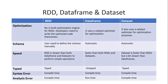Here are the main differences between RDD, DataFrame, and DataSet. In terms of optimization, RDD has no built-in optimizations — developers have to write optimization code themselves, which is a drawback. DataFrames and Datasets both have Catalyst optimizers, which is why they perform well. For schema, in RDD you have to define the schema manually, whereas DataFrames and Datasets can infer the schema automatically. For speed, RDD is slower than both DataFrames and Datasets. DataFrames are faster than both RDDs and Datasets, while Datasets are faster than RDD but slower than DataFrames.